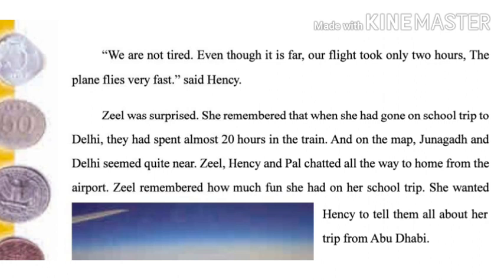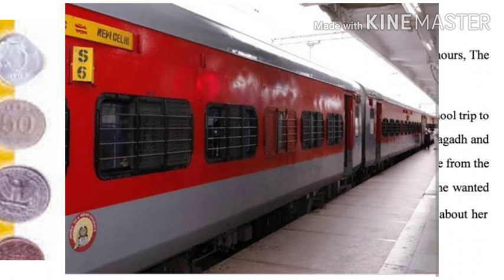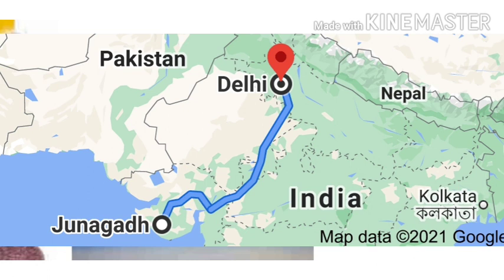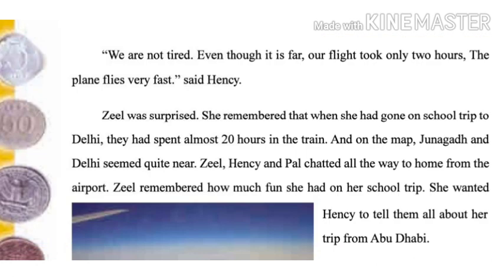Zeel was surprised. She remembered that when she had gone on a school trip to Delhi, they had spent almost 20 hours in the train. And on the map, Junagadh and Delhi seemed quite near. Yet Abu Dhabi, which is so much farther, took only 2 hours by flight. She was surprised.